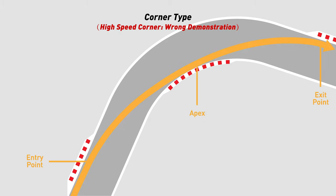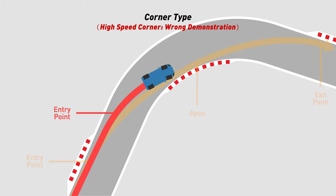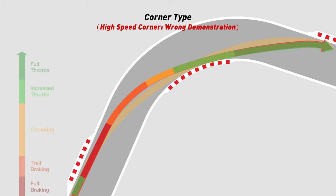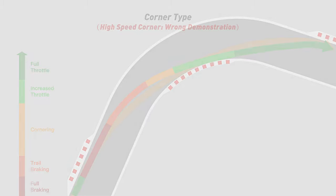Compared to the geometric racing line, if we choose a later corner entry and later apex, the corresponding increased throttle and full throttle phases will be later. By choosing such a racing line, while the car is fast prior to the corner entry point, it also loses more of its mid-corner and exit speed.